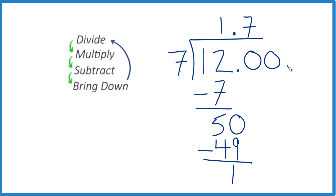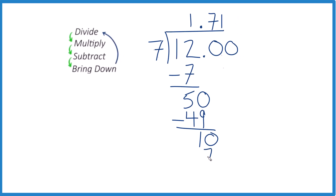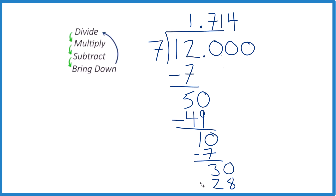You could call that 12.00 if you wanted. Bring down 10. So then we divide — 7 goes into 10 one time. 1 times 7 is 7. Subtract, we get 3. We could put another 0 out here, bring it down. And 7 goes into 30 four times, and it looks like this is just going to keep going for a while because 4 times 7 is 28.